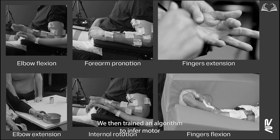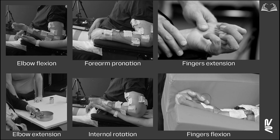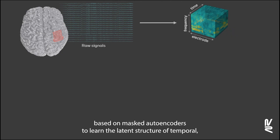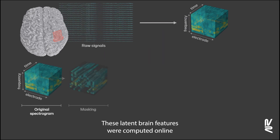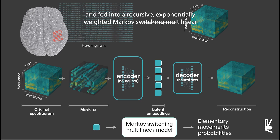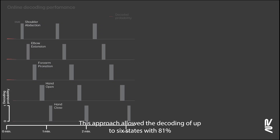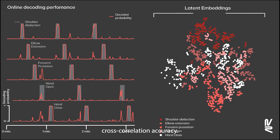We then trained an algorithm to infer motor intentions of the participant from his cortical activity. We designed a self-supervised learning strategy based on masked autoencoders to learn the latent structure of temporal, spectral, and spatial patterns in ECOG signals. These latent brain features were computed online and fed into a recursive exponentially weighted Markov-switching multilinear model, predicting the probability of different upper limb movements. This approach allowed the decoding of up to six states with 81% cross-correlation accuracy.